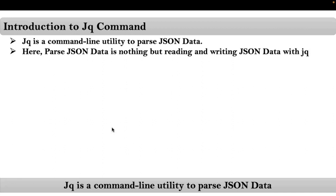What is meant by parsing JSON data? It is nothing but reading and writing JSON data. There are different ways to parse JSON data based on language. In Python, there is a module called JSON to read and write JSON data. In shell scripting, there is a command called JQ to read and write JSON data. We also have sed and awk commands in shell scripting, but compared to those, JQ is a more powerful tool to parse JSON data.